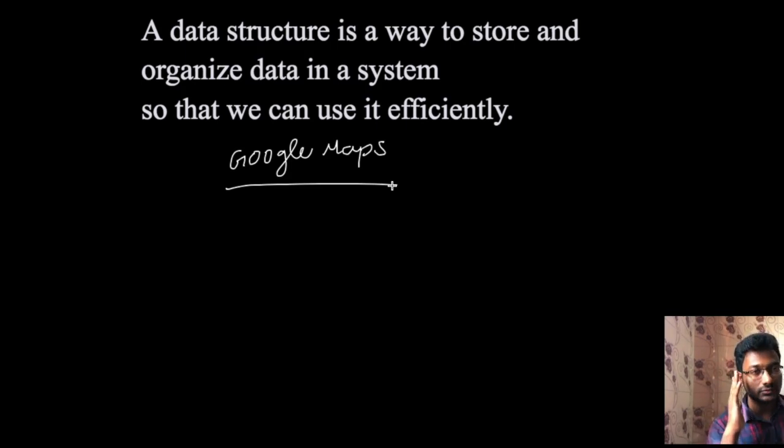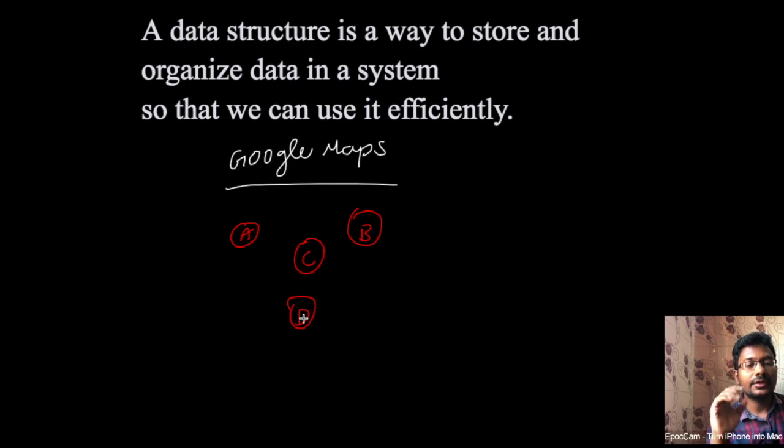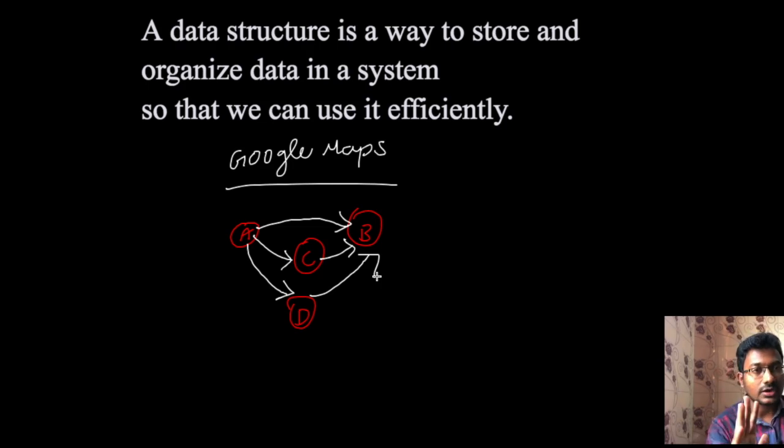The best data structures power Google Maps. Let's take an example with four locations: A, B, C, and D. If you want to go from A to B in Google Maps, it will tell you that you have three alternate ways. The first way is direct, the second way goes through C to B, and the third way goes through D to B. The system calculates the destination, traffic conditions, and determines the best route using optimal data structures.